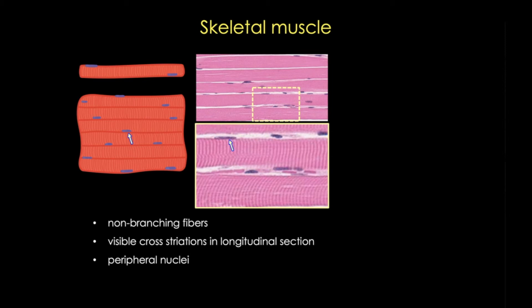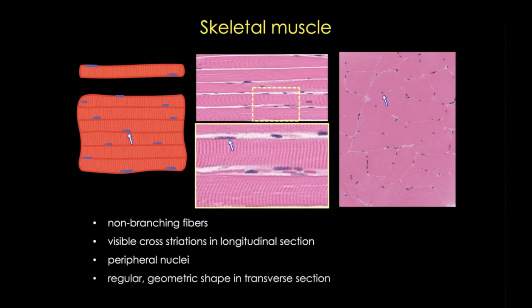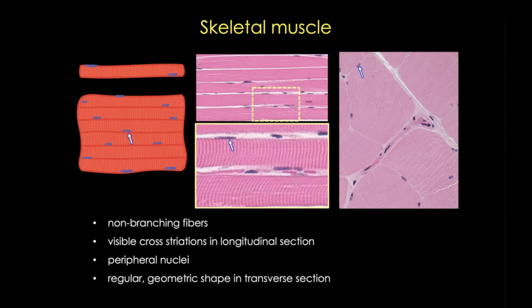Recall that during development, myotubes will fuse together to form these large cells, so each muscle cell will end up having multiple nuclei. Skeletal muscle is also easily recognizable in transverse or cross-section with its regular geometric fibers arranged in fascicles. You can see the peripheral nuclei here and in a magnified view. But don't be fooled by the nuclei between the fibers — these are immune cells either in the endomysium or in the blood vessels.